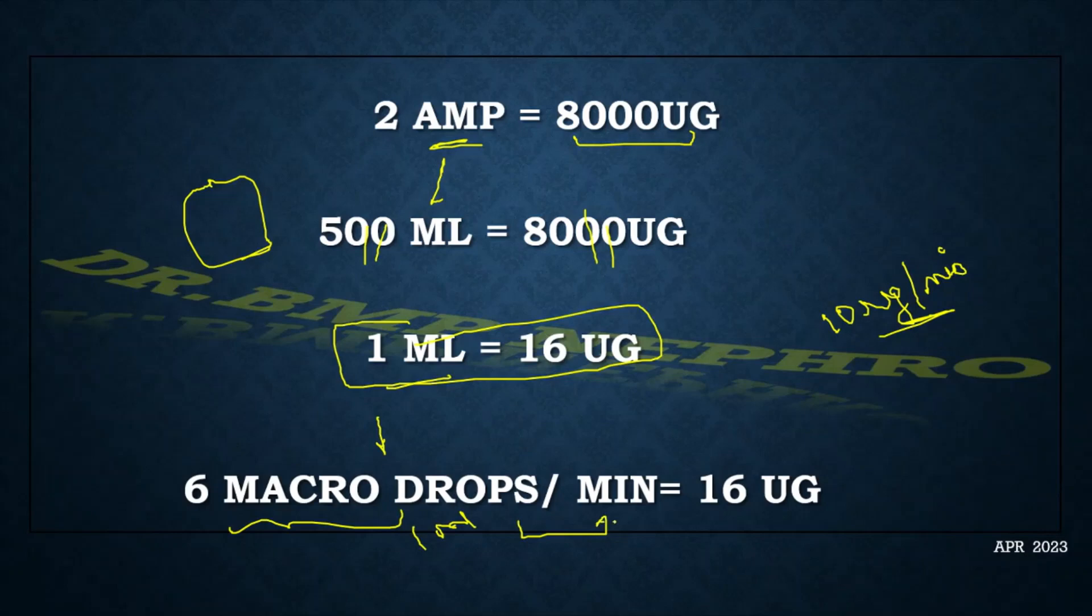If we have to start at a lower dose, we can start at around 4 micro drops per minute to give a required dose of approximately 8 to 10 microgram per minute. So this is the calculation for starting the infusion using normal saline bottle.